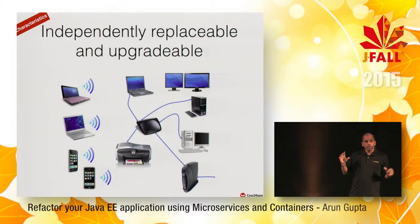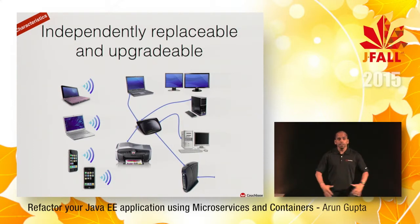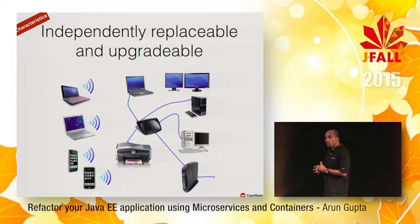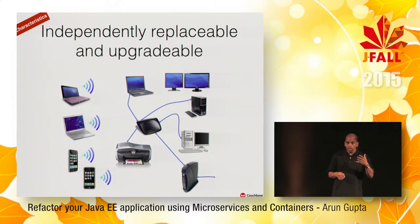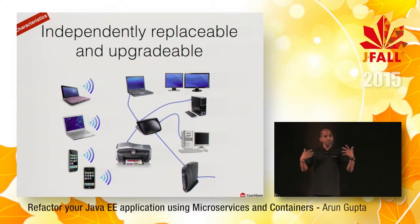This is a picture of a home Wi-Fi network — router in the middle, multiple devices around it. The fact that I'm upgrading my phone to an iPhone doesn't mean my entire network has to go down. I plug in the new phone and it just works. That's exactly one of the concepts for microservices: each microservice is independently replaceable and upgradeable. If you have a better-performing version of the catalog microservice, as long as you honor the contract, the details should be completely transparent.